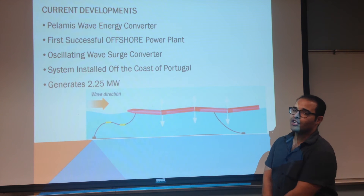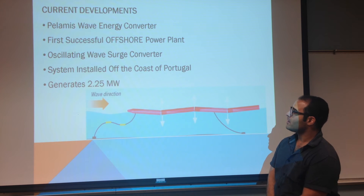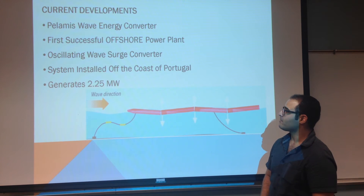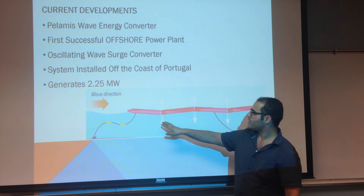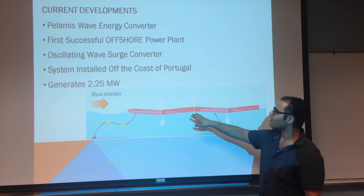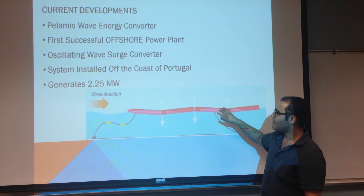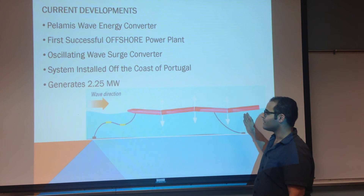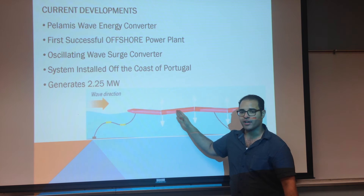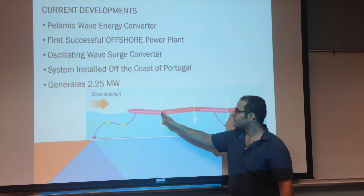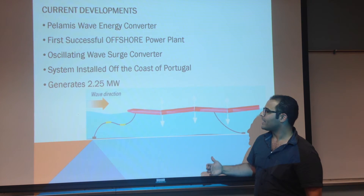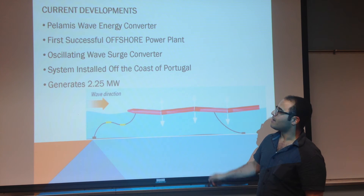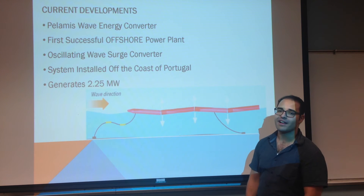The next noteworthy device is the Pelamis wave energy converter — the first successful offshore power plant. It is an oscillating wave surge converter with a series of partially submerged cylindrical structures that move in relation to one another as waves pass. Between the joints are hydraulic rams, which extract energy from those motions. The first successful system was installed off the coast of Portugal and generates 2.25 megawatts.